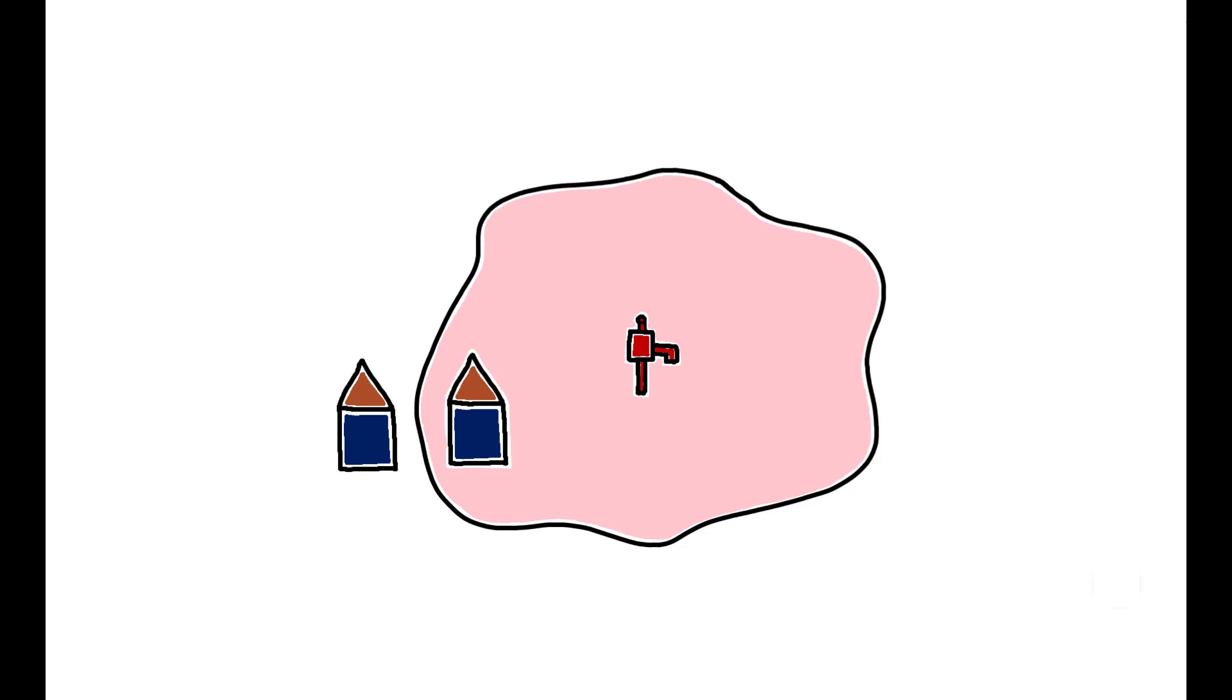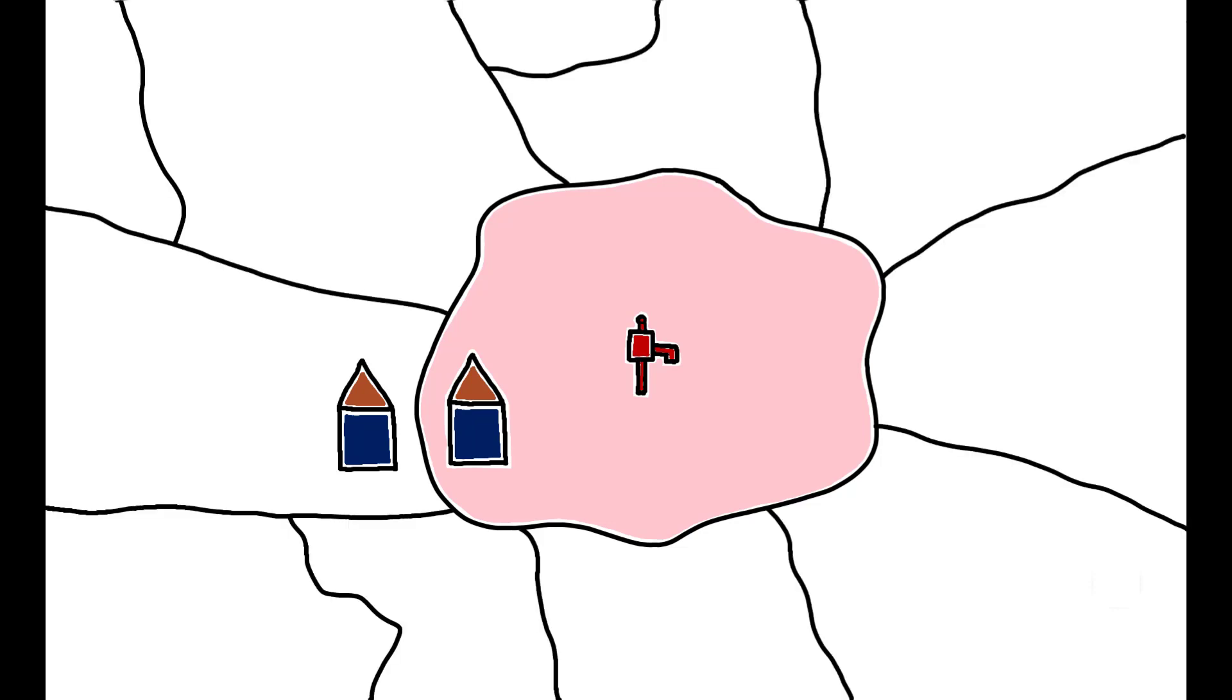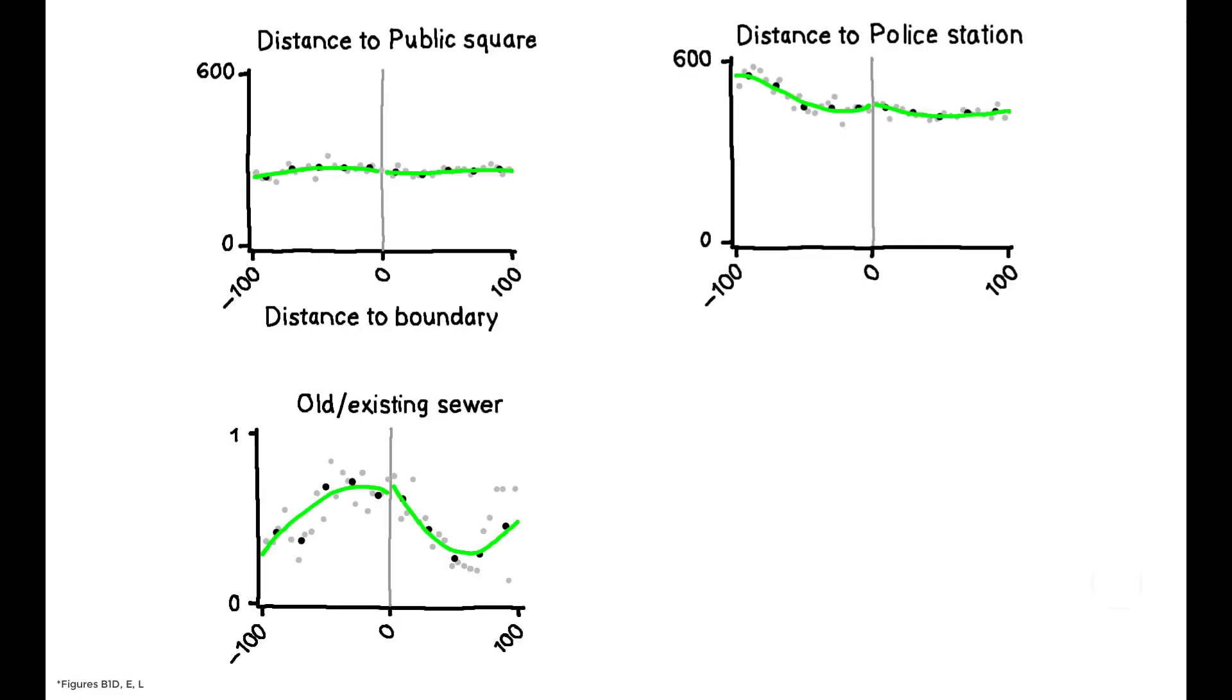On this point, it's important to note that catchment areas do not correspond to any meaningful administrative unit within the St. James Parish. In fact, they are defined only by households' travel distance to the nearest well. This means that households located just on either side of the boundary should not differ in any meaningful way aside from their exposure to the outbreak, and the authors show this to be true for a number of variables, including property values, their main outcome of interest, as measured in 1853 prior to the outbreak.